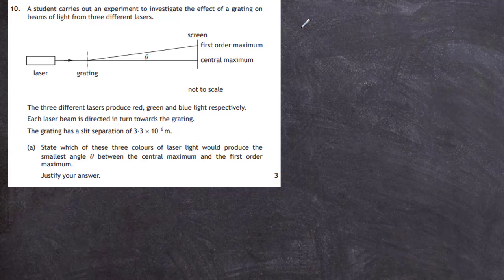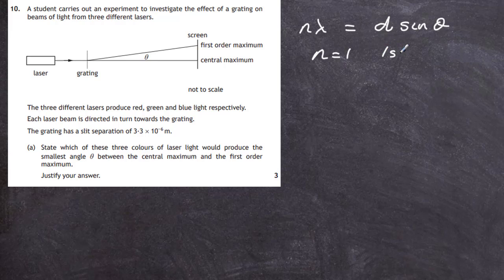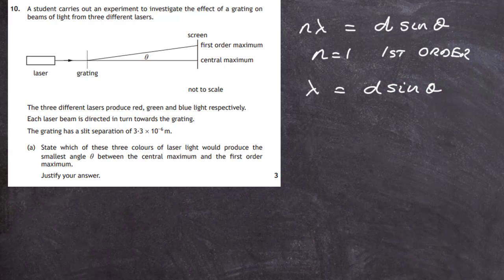To justify our answer, we begin with the diffraction equation: nλ = d sin θ, where θ is the angle between the central maximum and order n. Since we're dealing with the first order, n = 1, so the equation becomes λ = d sin θ. Rearranging, we get sin θ = λ / d.